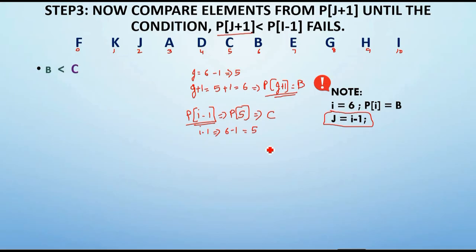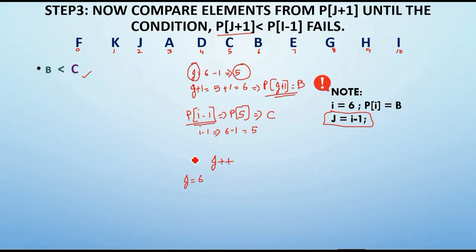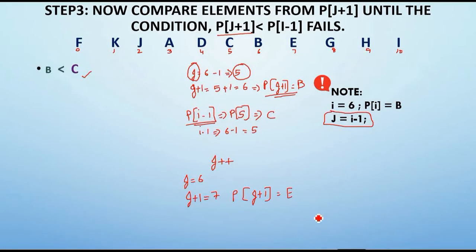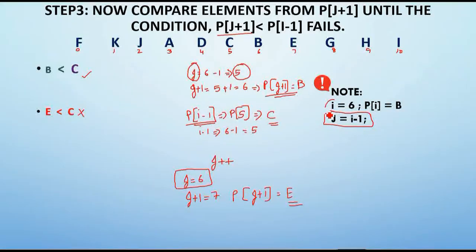We check whether B < C — the condition is true. Since it is true, we increment j from 5 to 6. We want j+1, so 6+1 = 7, giving P(j+1) = E (at position 7). Now we check whether E < C — the condition fails. Since the condition fails, we stop this step. When the condition failed, j = 6 and i = 6. With that in mind, moving on to the next step.